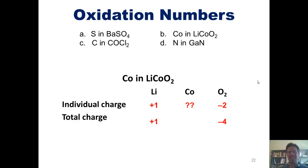Cobalt's oxidation state then has to be a number that when added to +1 and -4 will give an overall total of zero, which is the charge for this entire compound. What number is that? It's +3. Thus, cobalt's oxidation state in this compound is +3.